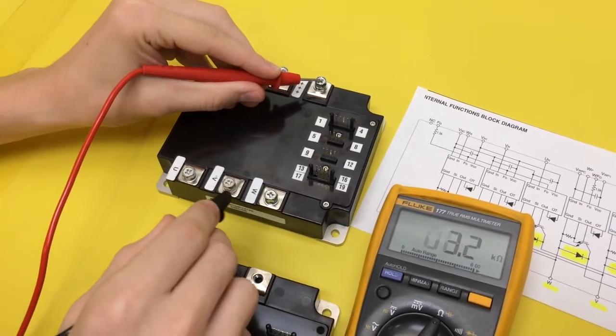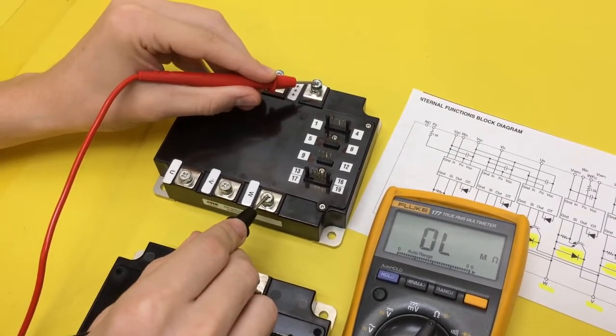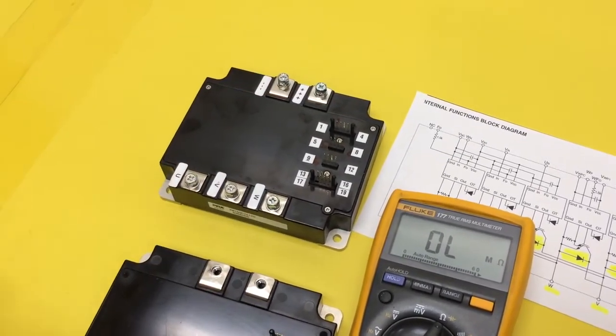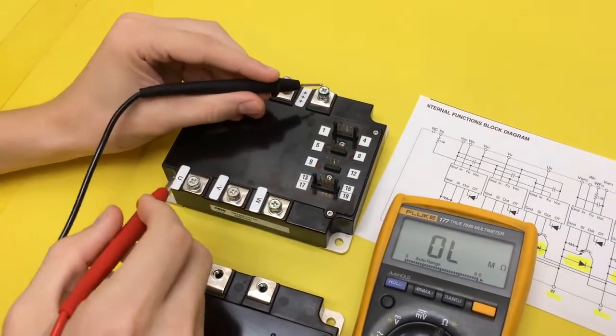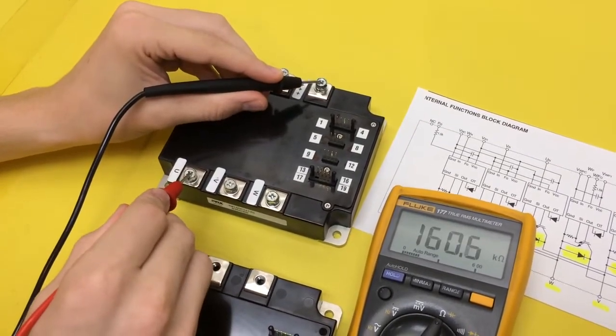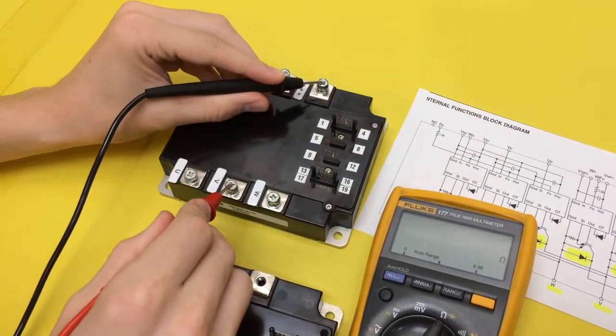That's a short, that's bad. Go to W. Oh well, and then this will read good, roughly 160K.